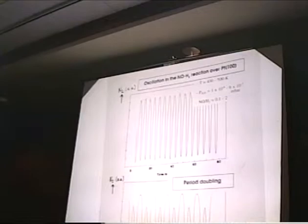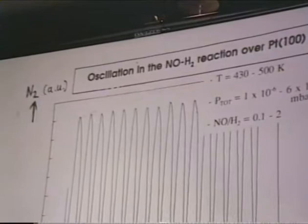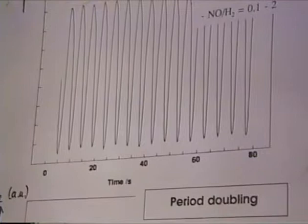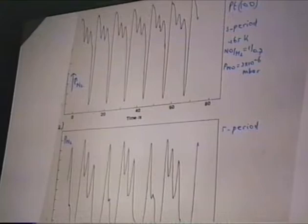Now, oscillations. I will show a number of oscillations that we found for platinum surfaces and for rhodium surfaces. We found oscillations for the NO-hydrogen reaction under both oxidizing and reducing conditions, over a large range of temperatures. The oscillation is very regular — it is a steady oscillation, stable for many hours. By changing the NO-to-hydrogen ratio, you can change the period and the structure of the oscillations.